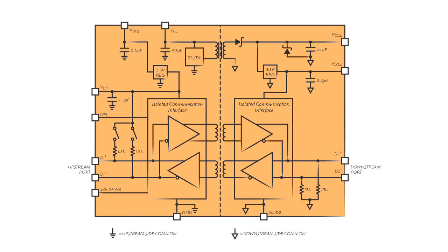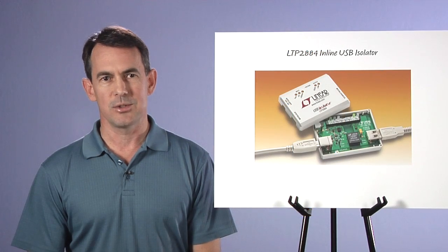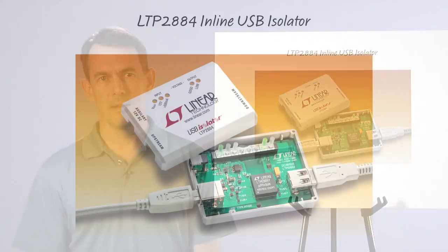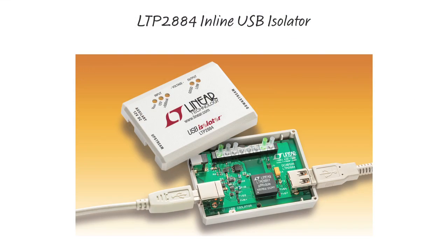The power converter utilizes a variable frequency boundary mode flyback with a range of 5 kilohertz to 1 megahertz. Now let's look at practical uses of the available power by using the LTP2884. The LTP2884 is a complete 2500 volt inline USB isolator based on the LTM2884, featuring a rugged enclosure with high retention USB connectors, hot plug protection, power path, surge protection, and LED status indicators. Of course, no drivers or software are required. Just plug and play.